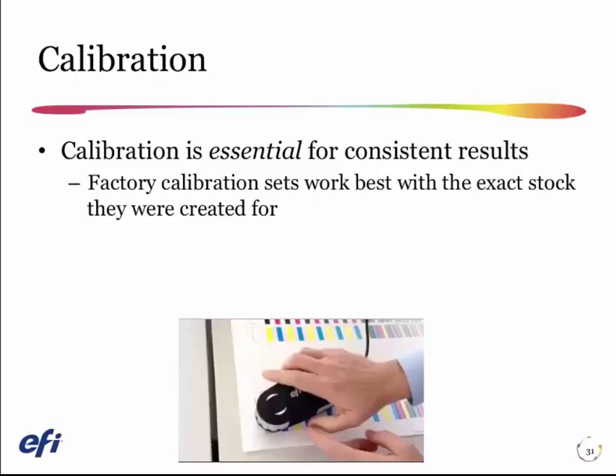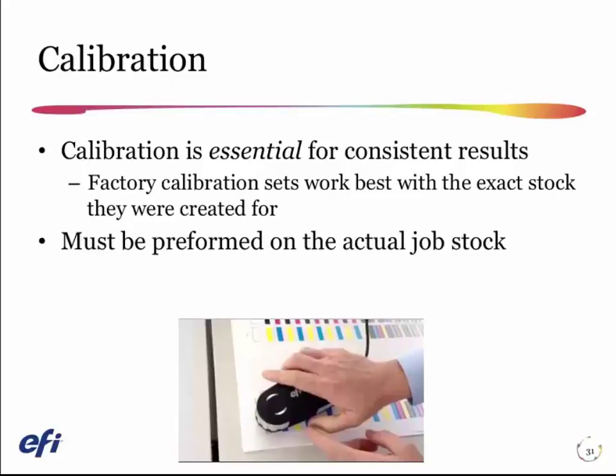Next, we're going to calibrate. Calibration is essential to get consistent results on any paper with any DFE. Generally, if you're going to use a factory calibration set and not make a new calibration set and profile for your paper, you want to use a paper as much like what the manufacturer used as possible. On the Fiery DFE, we often give you tips about what that paper is, or you can reach out to EFI on the forums to find out. To get it right, I need to make a custom calibration for your paper. When I do the recalibration later, I need to calibrate on the actual job stock. Calibrating only the uncoated sheet in the morning is not going to recalibrate your coated sheet so that it prints consistently later in the day.